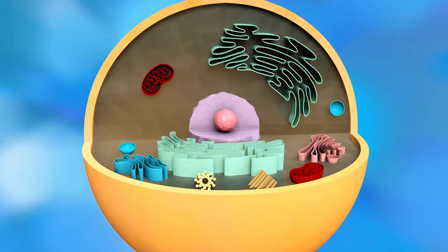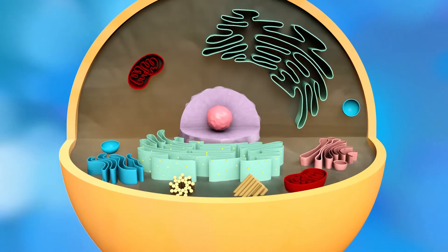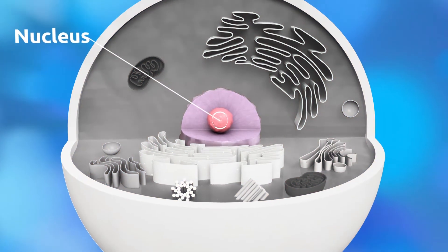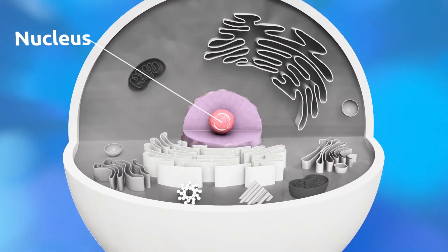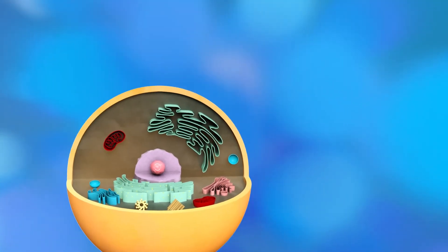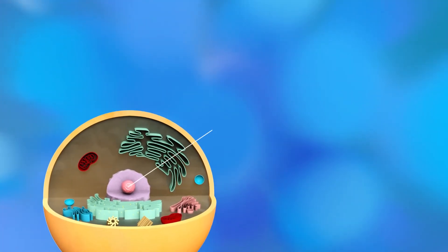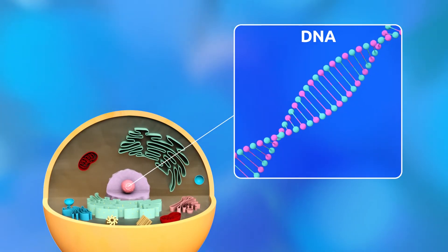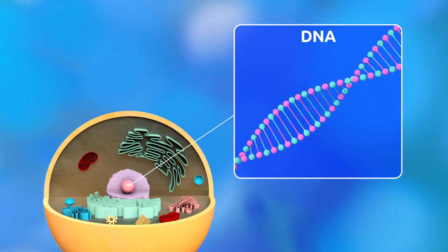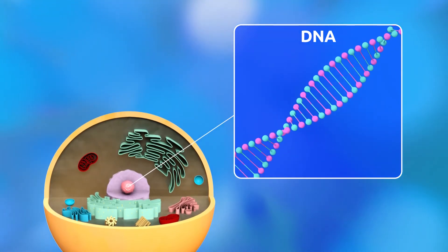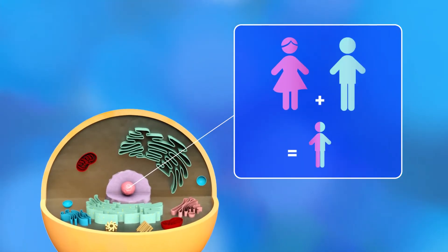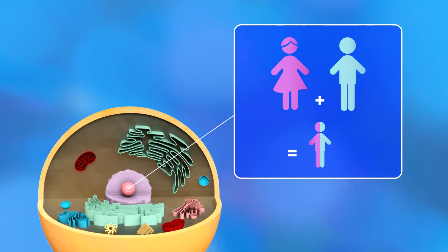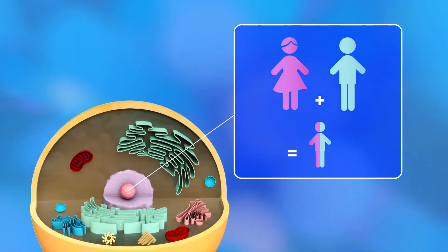An animal cell is a eukaryotic cell. The nucleus is in charge of all cell functions. DNA is stored in the nucleus and is made up by genes which hold genetic information. When animals reproduce, the genetic material will pass on to their young.